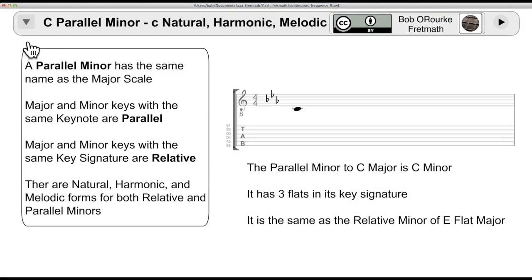The other type of minor is a parallel minor which has the same name as the C major. A general definition of parallel means running side by side. You know what the name is, it's the same name as the major, but what you want to find out here is the key signature, the sharps and flats.